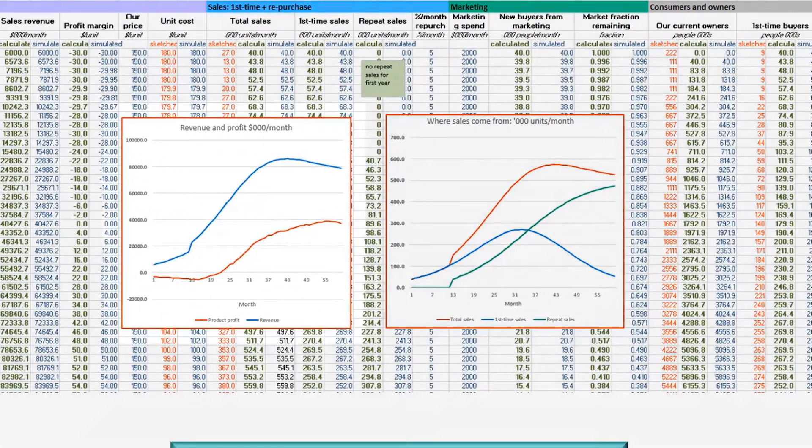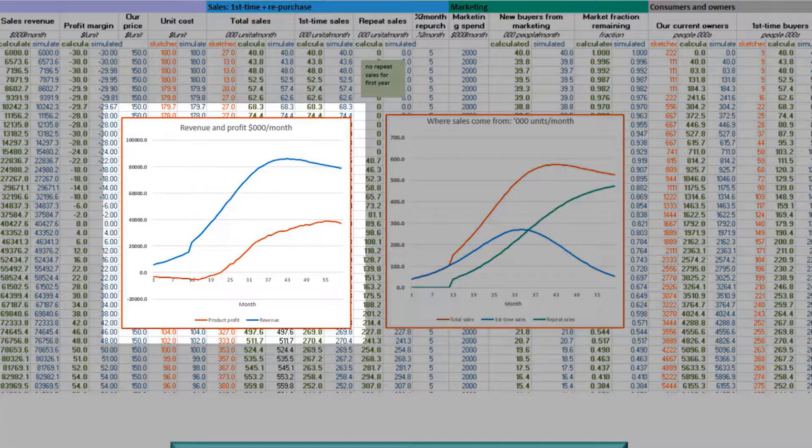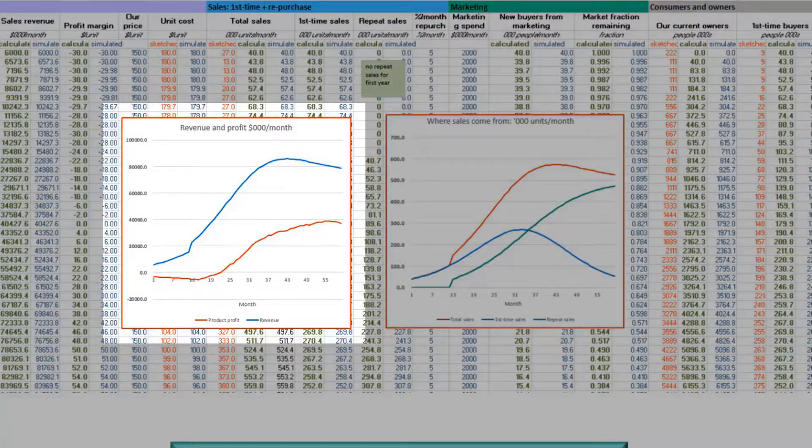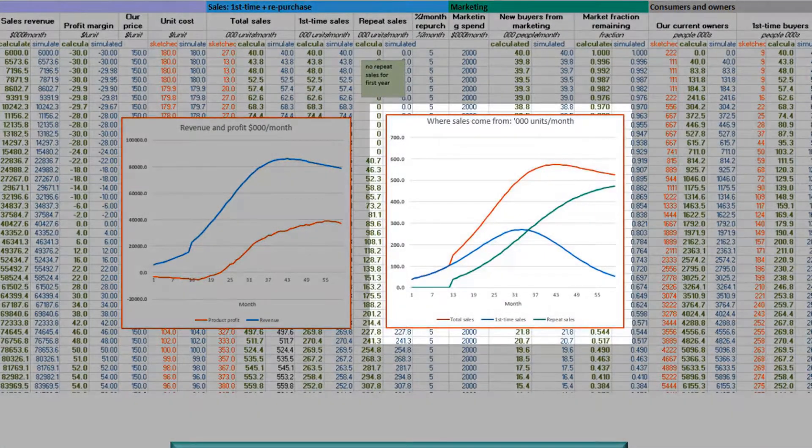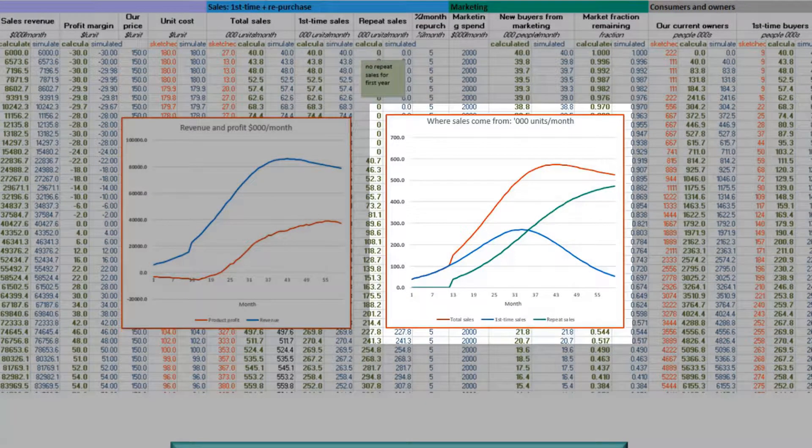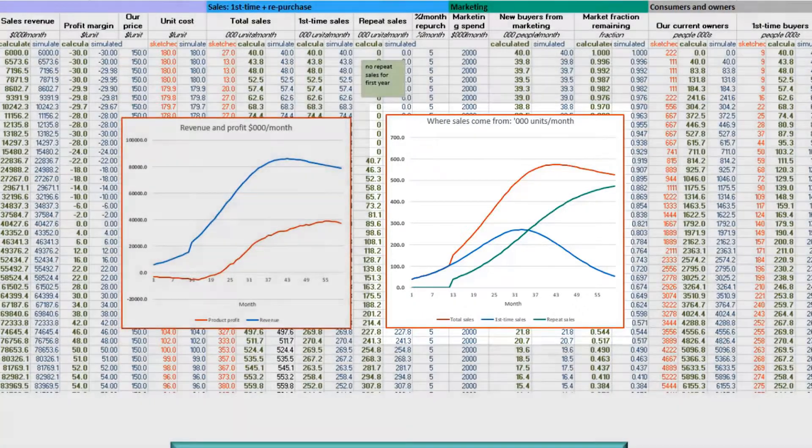The first chart combines those two items on revenue and profit growth. The second chart shows the sources of sales: the blue line is first time customers buying the product, the green line is replacement purchases from people who've already got it, and the red line is the sum of the two.